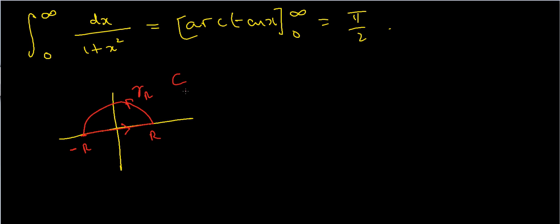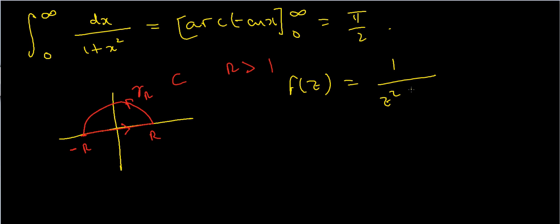I'll call this contour c. I'll take r to be greater than 1 — you'll see why later. Now I'm going to choose a suitable function to integrate over. I'll choose f(z) = 1/(z² + 1). It's important to note that the function I choose won't always be the same as my integrand; for instance, if I had a sine term in the numerator, I'd probably use an exponential function instead.